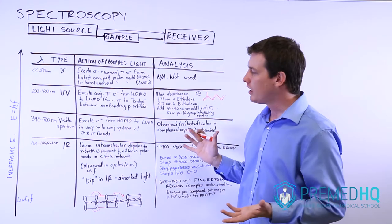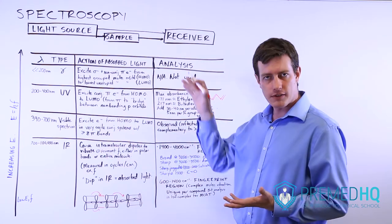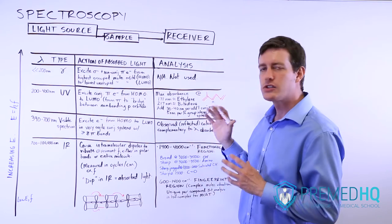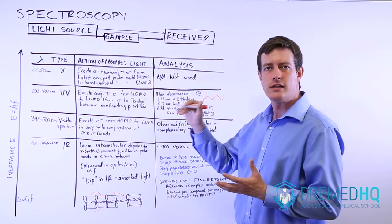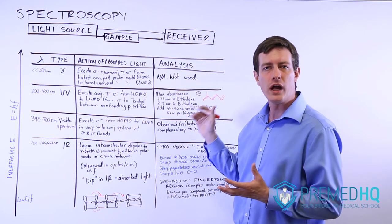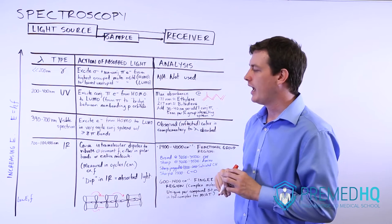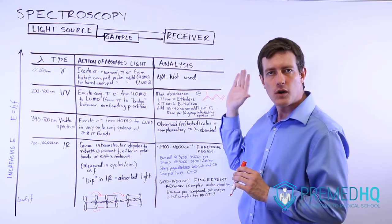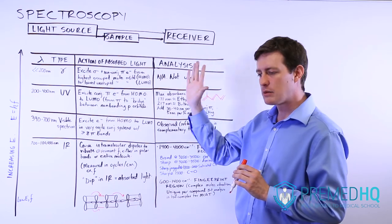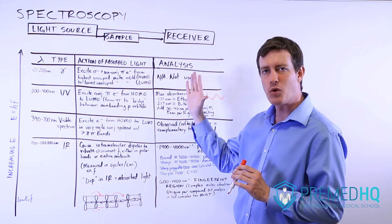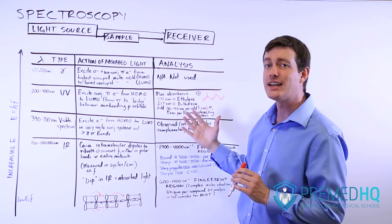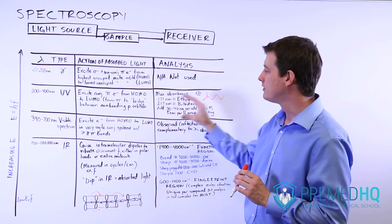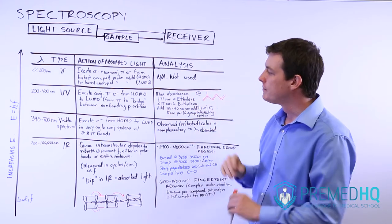You can also plot visible spectroscopy on a graph, and it's fairly straightforward. You see a curve at a certain nanometer wavelength where the maximum absorption occurs, and that can give you clues as to what sort of light is being absorbed.